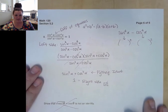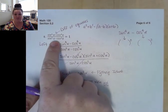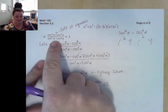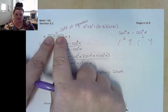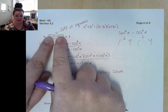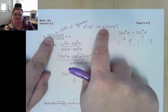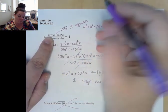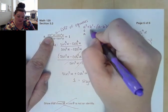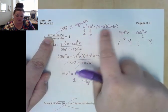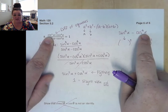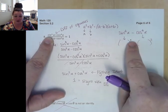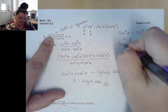For number 8, this one looks complex, but the first thing I notice is that I have a difference of two terms that are perfect squares — sine to the 4th and cosine to the 4th. When you have a difference of perfect squares, you can factor it as a difference of squares. So I need to figure out what base is being squared: to get sine to the 4th, you square sine squared; similarly for cosine to the 4th.